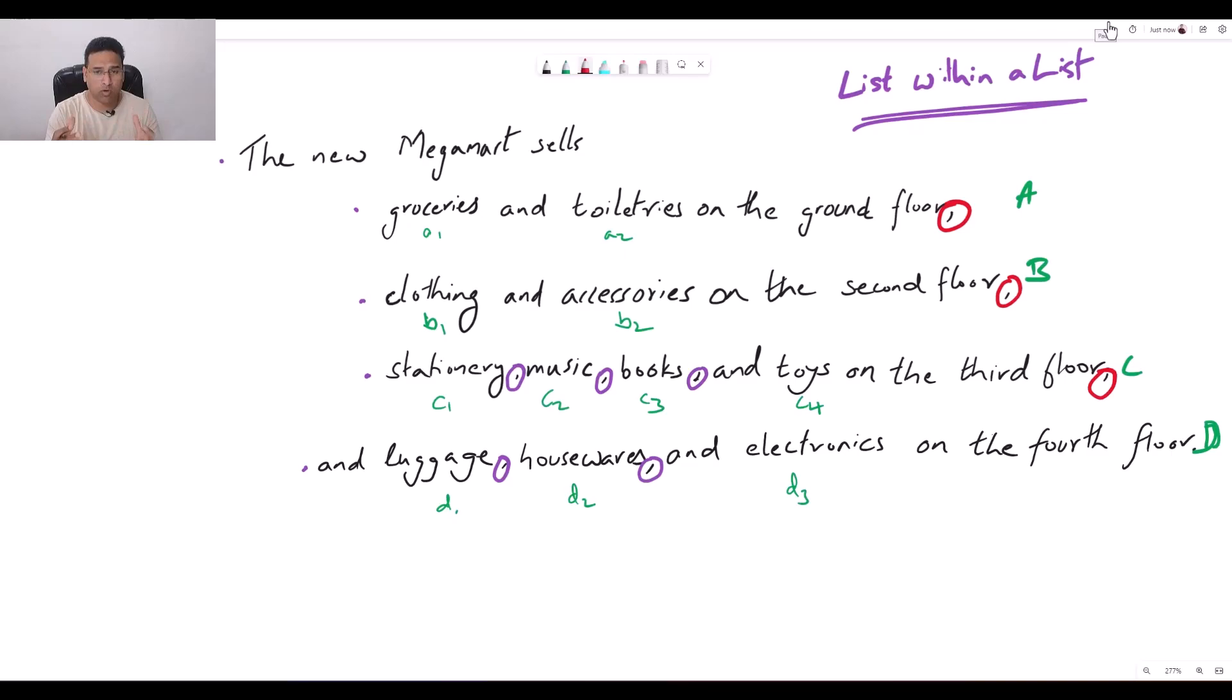We cannot use the same punctuation for two operations of different rank. Now, what do you think? Which is the higher operation? Which operation is of a higher rank? Or in simpler words, which of these commas separate bigger or larger or more complex entities? Well, the answer is these ones. These commas separate super entities. So when you have super entities, just using a comma would not suffice. You would need a super comma. And that, ladies and gentlemen, brings us to a semicolon.